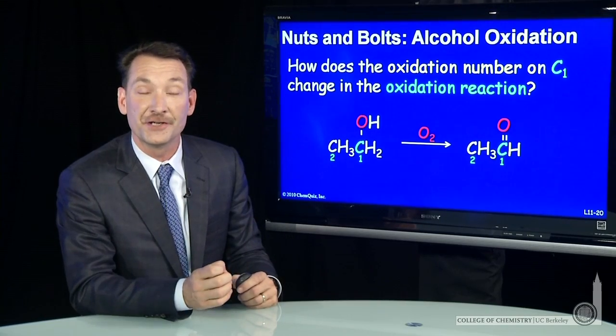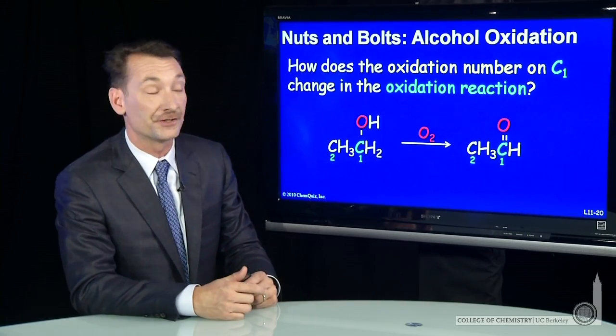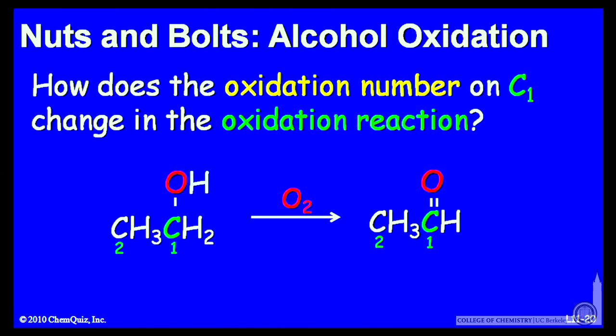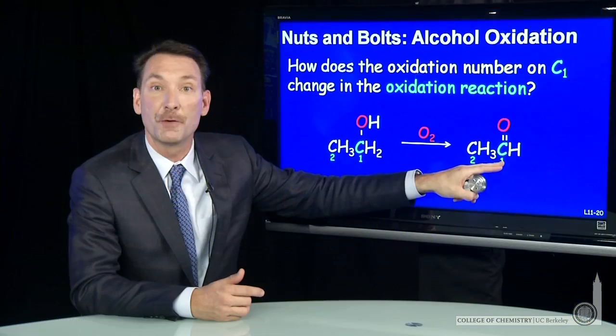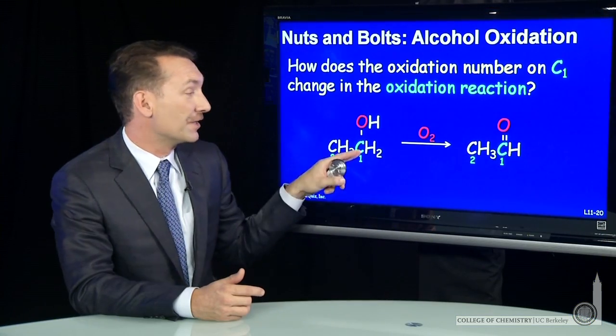Let's do a calculation involving oxidation numbers determined from Lewis dot structures. Here are two molecules undergoing an oxidation reaction. The question is, what happens to the oxidation number of carbon number one that I've listed here in green?